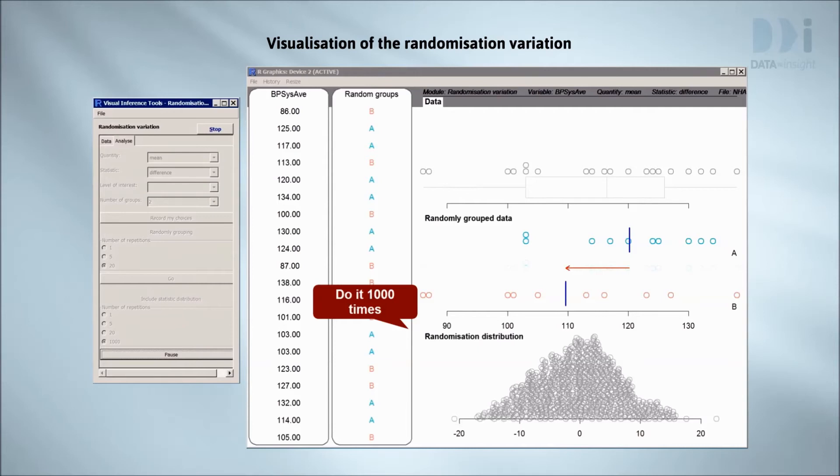We now know, however, that random assignment to groups can, on its own, produce quite large differences between group centers. If we saw a difference between the drug and control groups in experimental data of a size that could easily be generated by random assignment acting alone, this would not provide any evidence that the drug was effective. So to believe that we have evidence that the drug is effective, we'd have to see differences between the drug group and the control group that were bigger than random assignment acting alone would produce. In the next video, we'll flesh out this idea and show how we can use it in data analysis.